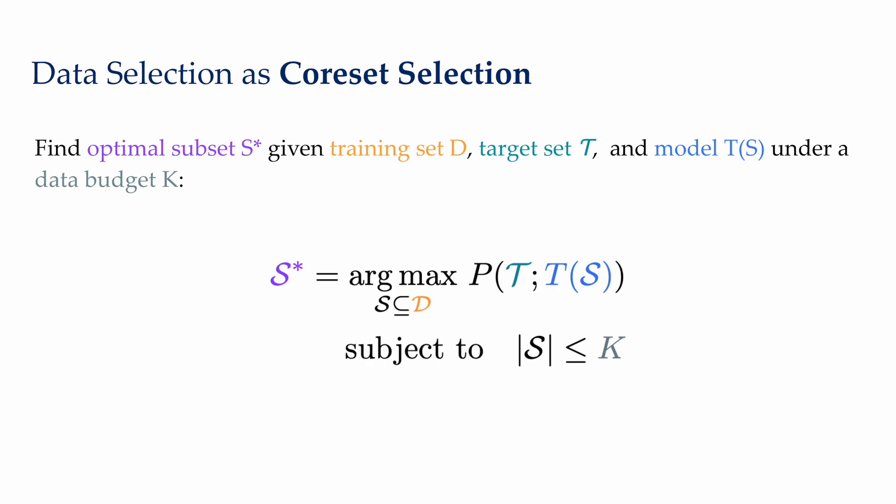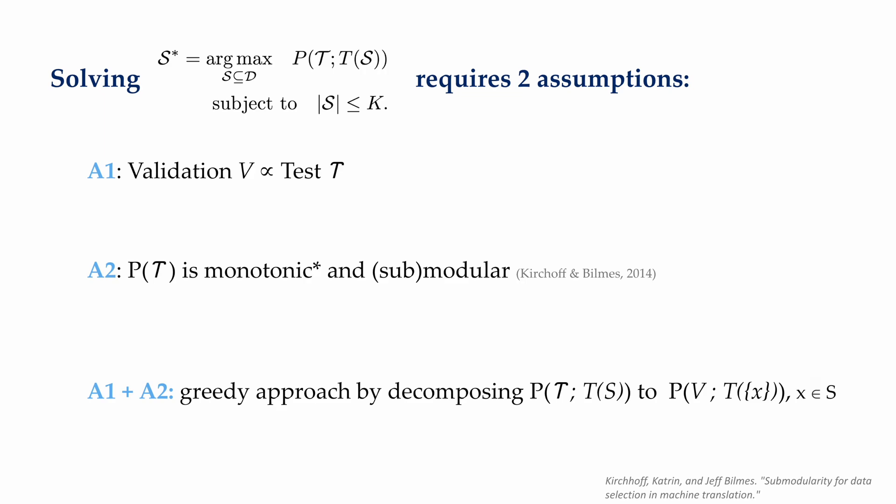To introduce the problem a bit more formally, it will be a good primer to first define what data selection is. In machine learning, this is formulated as a core set selection problem. In a learning task, we are given a large training set D, a target task tau. Our goal is to find the optimal subset S-star such that the model T of S trained on that set S maximizes some performance function P. The only constraint that we have is that the selected set S at max could have a max cardinality of K. That is our data budget.